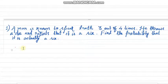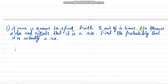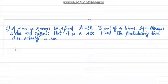Hello everyone. In this video I am going to discuss some sums on Bayes' theorem. This is the first problem: a man is known to speak truth 3 out of 4 times. He throws a die and reports that it is a 6. Find the probability that it is actually a 6.